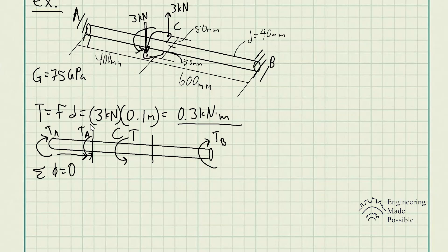For the section from B to C, cutting and looking from point B, torque T_B acts clockwise. Therefore, the internal torque at the cut face is equal and opposite — acting counterclockwise. So the internal torques are T_A for segment AC and T_B for segment BC, and these are the torques we will use in the angle of twist equation.